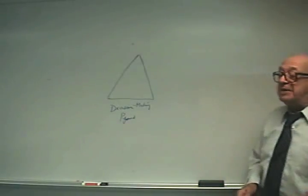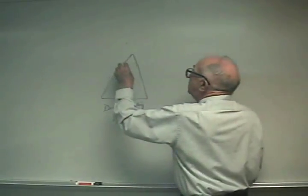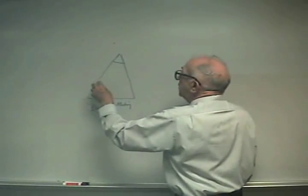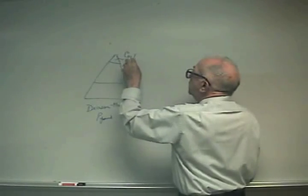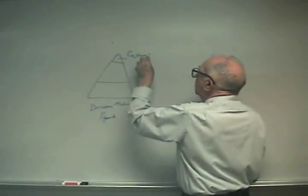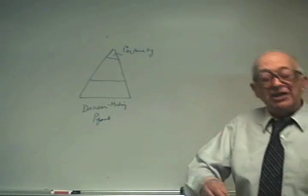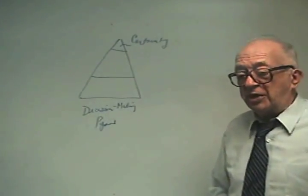The reason why we have it as a pyramid is because we divide this into three different sections. This we call certainty. That's where we would like to be. If we do a certain act, we would like to be certain to occur.